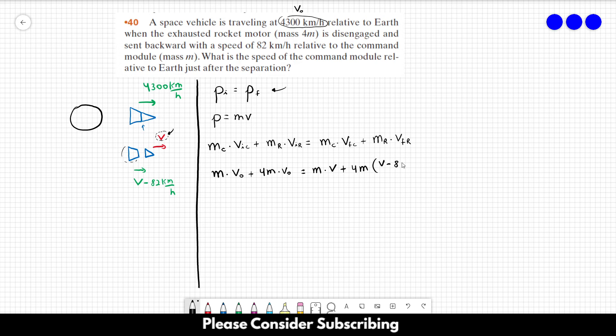We can use kilometers per hour here because we're just interested in the speed itself. If we needed to calculate the linear momentum, then it would be better to convert everything to meters per second, but in this case we don't need to do that.